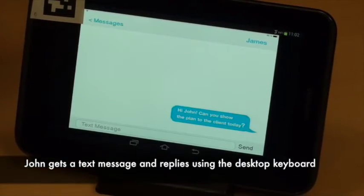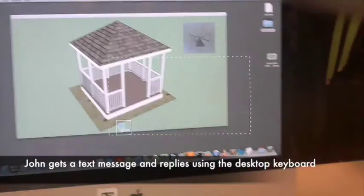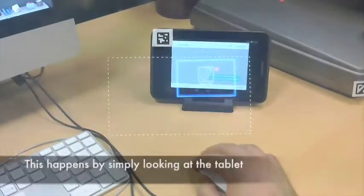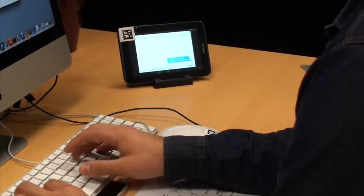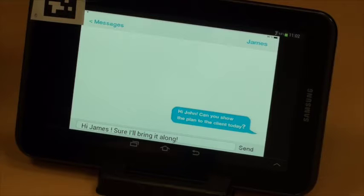John receives a text message from a colleague on his tablet. Rather than use the tablet's soft keyboard, he uses Glui's head tracking feature to reply with his desktop keyboard. John simply looks at the tablet while he types and the text is redirected.